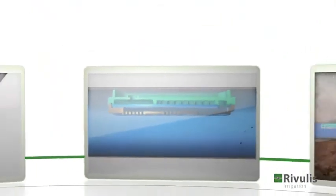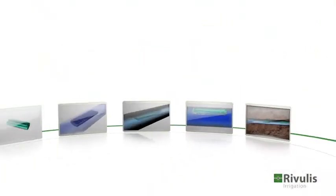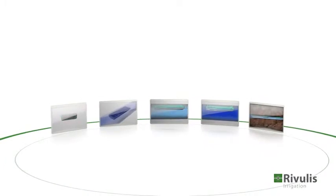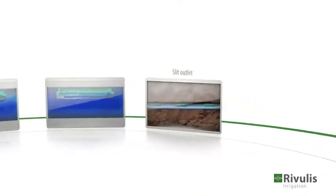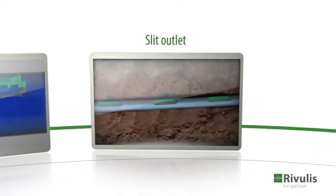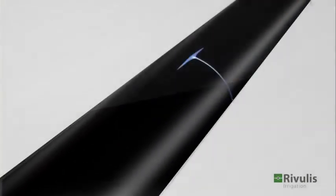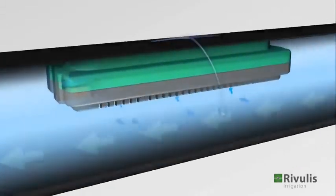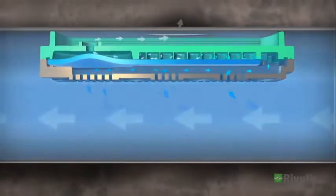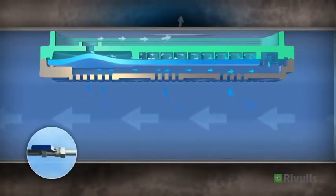The D5000 drip lines are manufactured with a slit outlet, which effectively prevents soil ingestion. Thin-walled D5000 drip lines, up to 15mm wall thickness, have a slit outlet that protects drippers in subsurface applications from ingesting dirt particles.